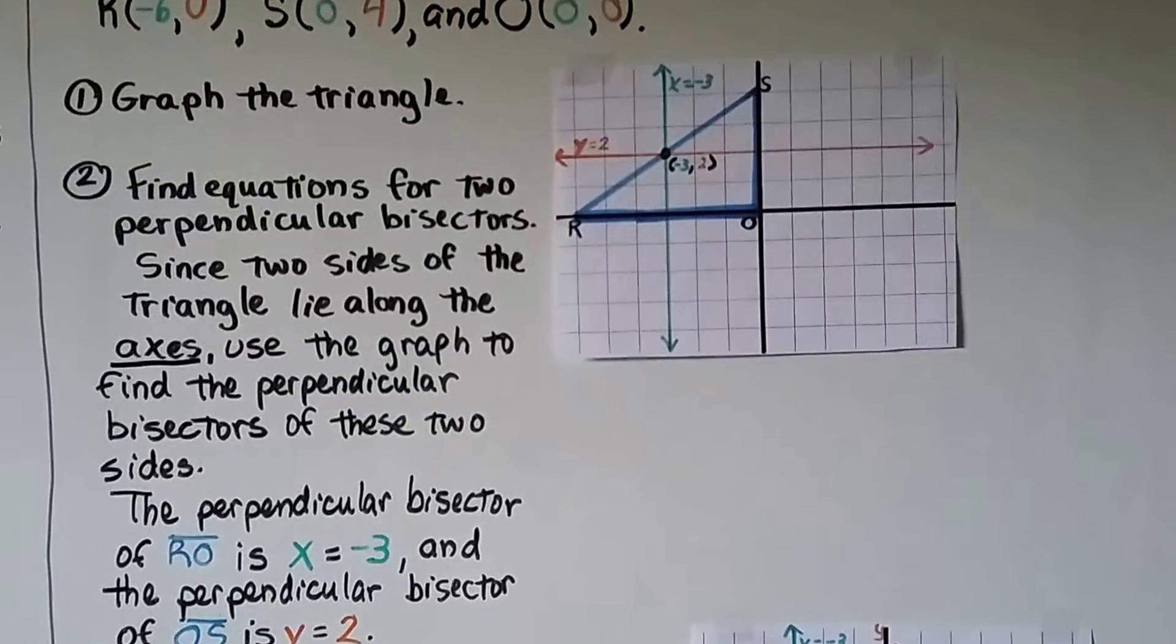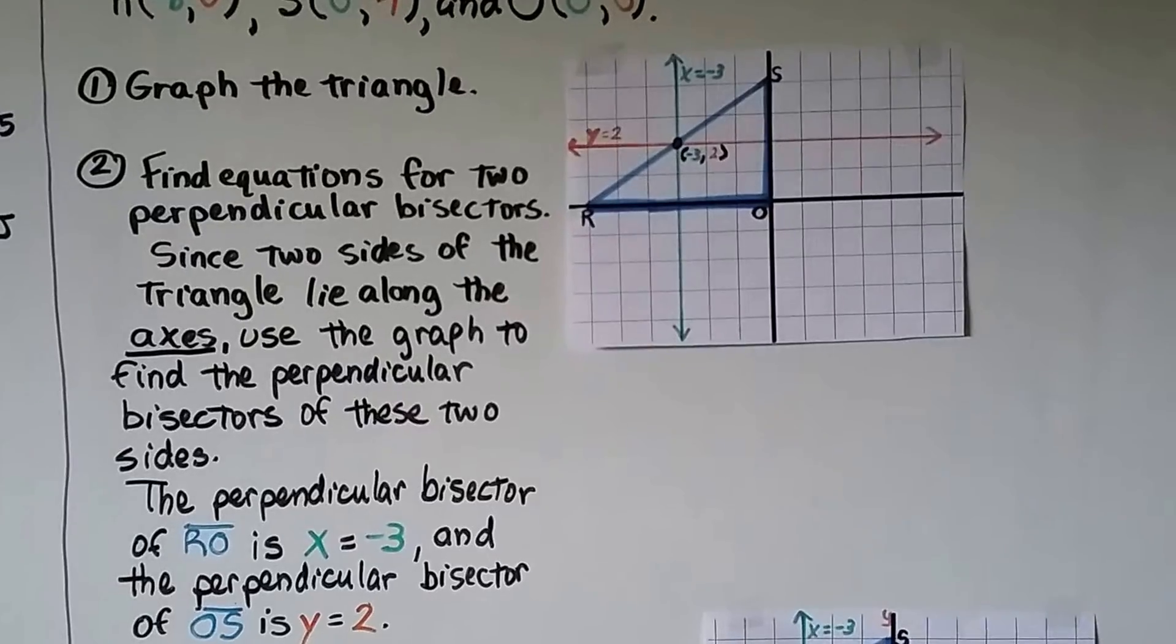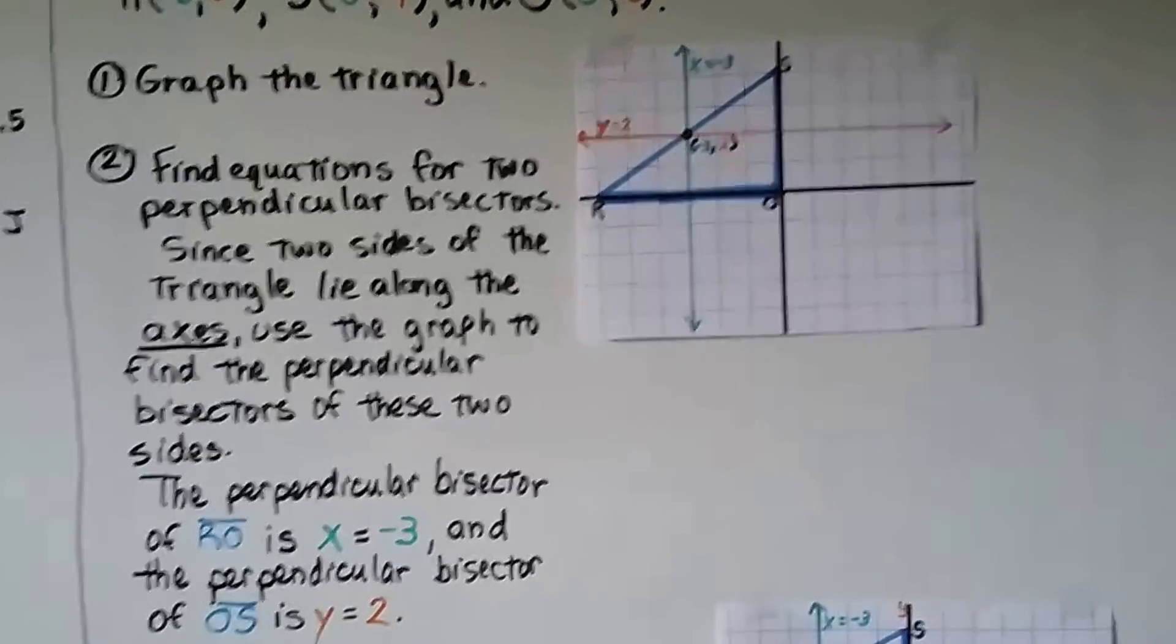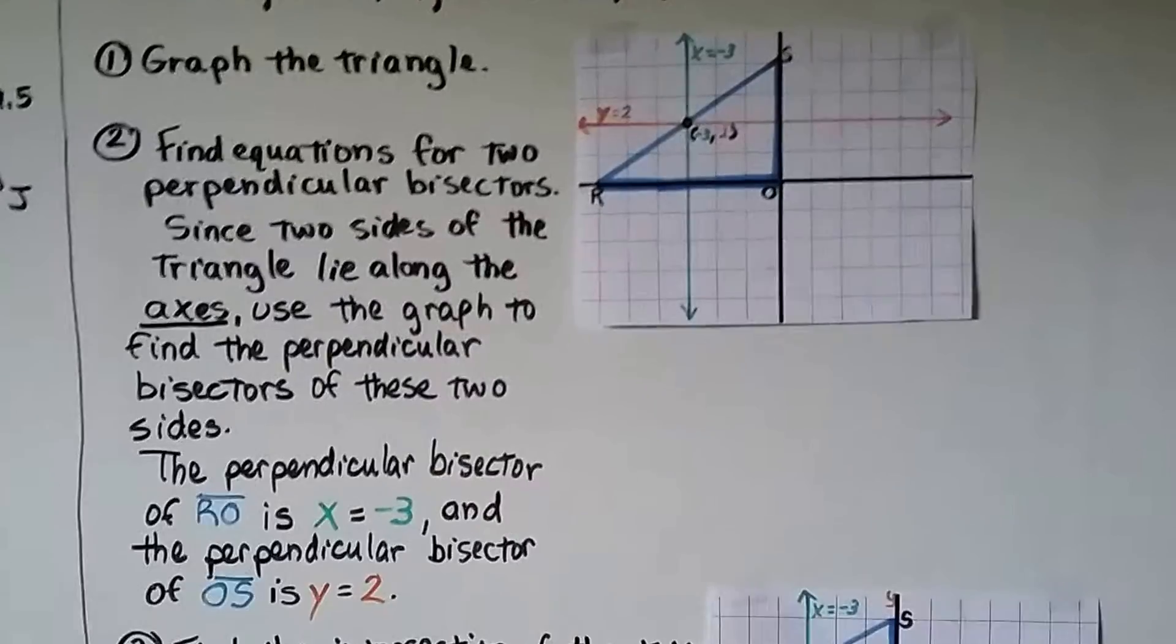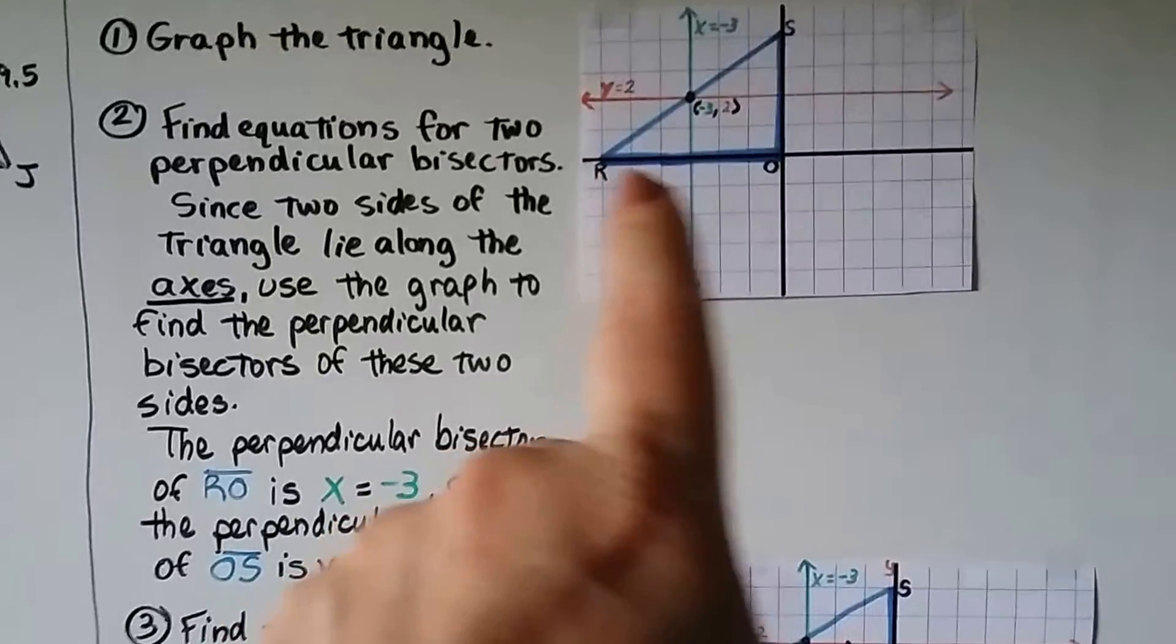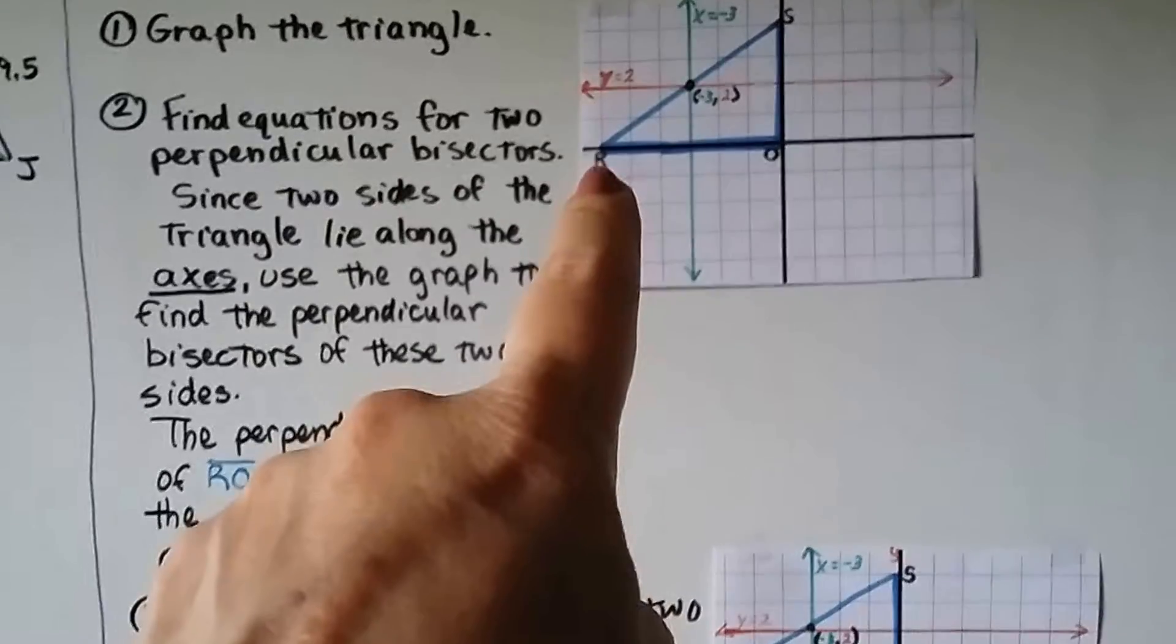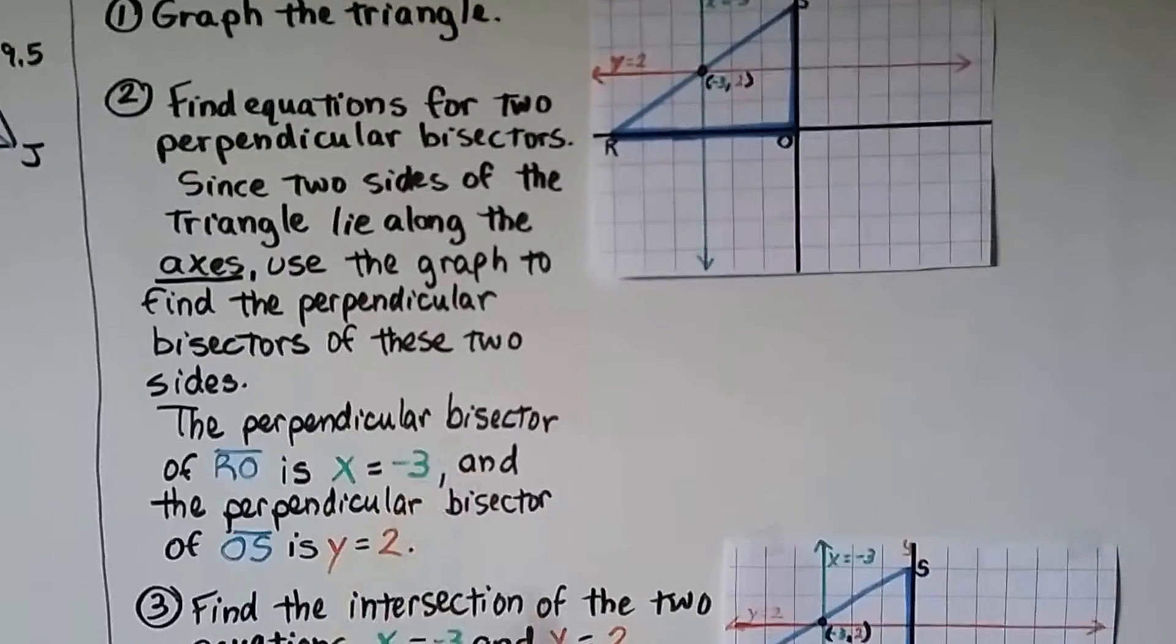We find equations for two perpendicular bisectors. Since the two sides of the triangles lie along the axis, which makes our life easier, we use the graph to find the perpendicular bisectors of these two sides. Look at the perpendicular bisector of segment RO right here. If that's negative 6, then the bisector would be at negative 3, half of it. So x equals negative 3.